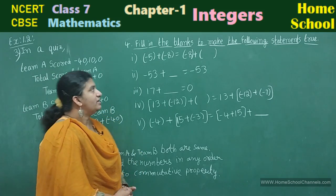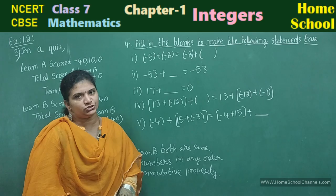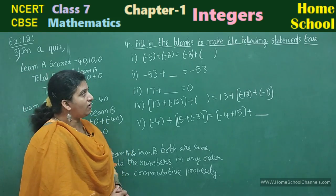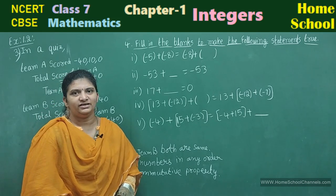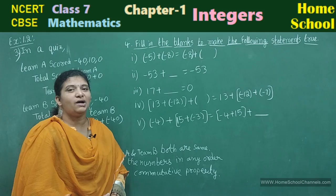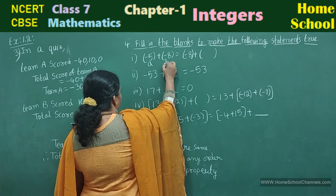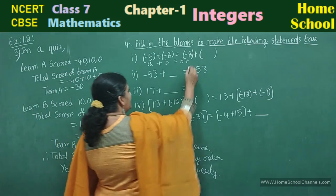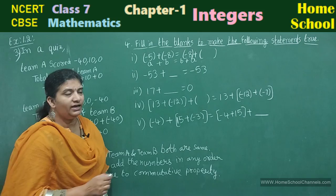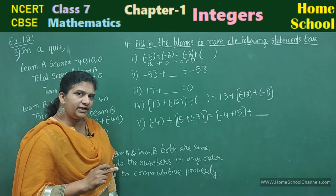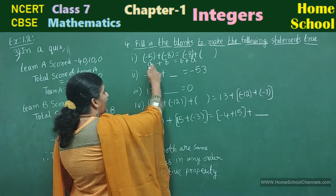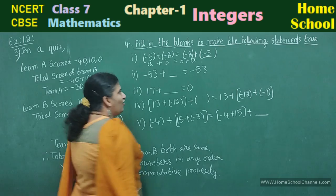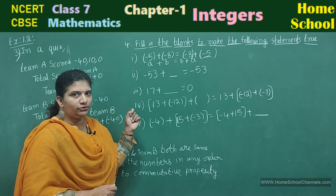Now let's see the last question in this exercise: fill in the blanks to make the following statements true. In this question we are going to recall the properties. First one: minus 5 plus of minus 8 is equal to minus 8 plus of dash. This is commutative property — A plus B equals B plus A. If minus 5 is A and minus 8 is B, then the missing value is A, which is minus 5.